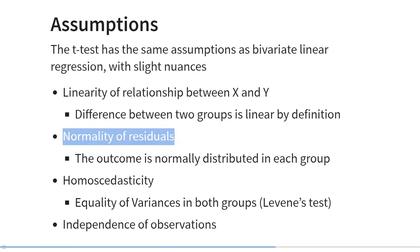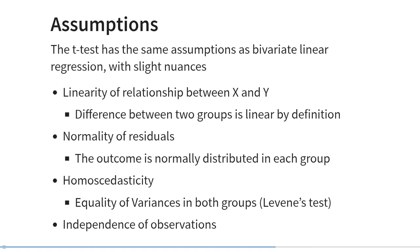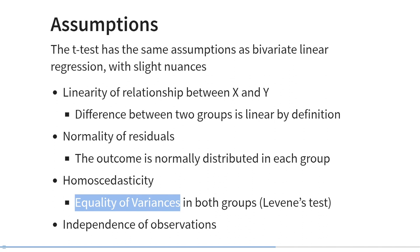The second assumption relates to normality of residuals. We still assume the residuals are normally distributed, but with only two predictor values, this is the same as assuming the outcome is normally distributed within each group. The third assumption is homoscedasticity — specifically that the variances are equal — which simplifies to assuming the variances of both groups are equal. Previously you learned to test homoscedasticity by looking at a residuals plot, but when comparing two groups it's much easier: we can perform a difference test on the variances using an F-test.